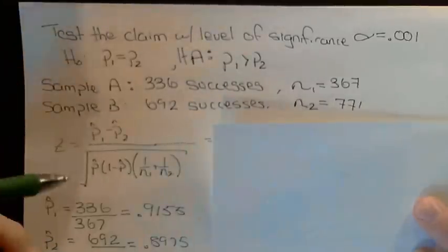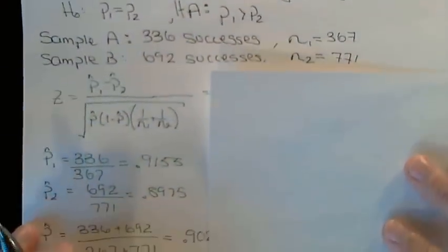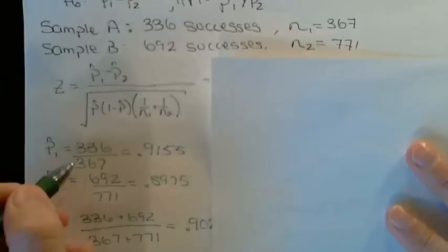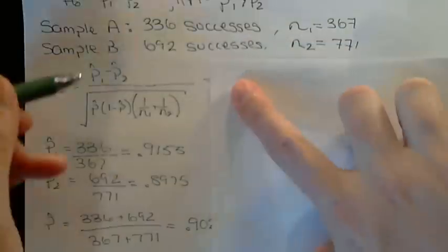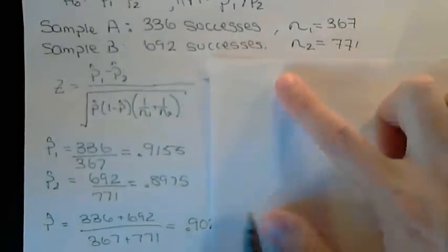Finding the sample proportions. The sample proportion is the number of successes divided by the total sample size. For the first sample and for the second sample, we calculate the number of successes divided by the total sample size.